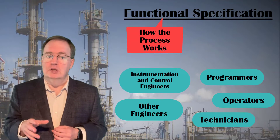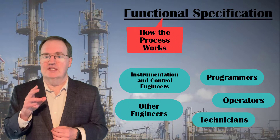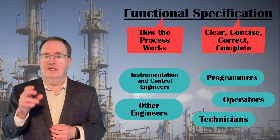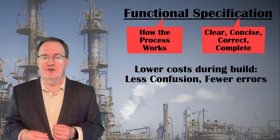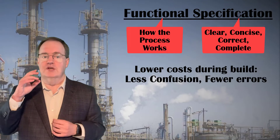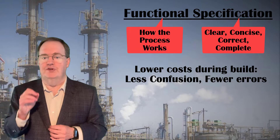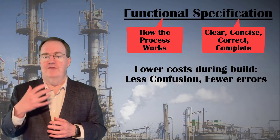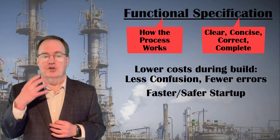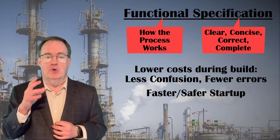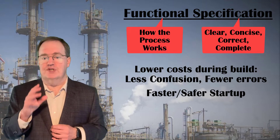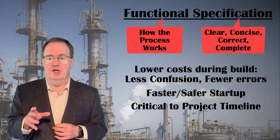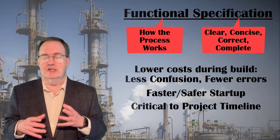It is functional because it describes in detail how the process and its automation will work. It is a good specification if it is clear, concise, correct, and complete. A good functional specification will reduce project costs because it will lead to less confusion and fewer errors by those who build the software and hardware for the control system, and will lead to a faster, safer startup and commissioning. Most projects struggle with flaws in the control system during startup — it is a huge factor in project timing and success.